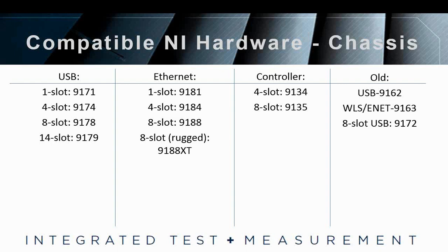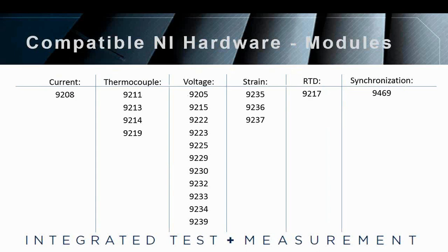The next slide covers the compatible NI hardware modules — all the types of modules that can be used with iTestSystem. You can collect current channels using a 9208 module, thermocouple channels using the listed modules, voltage modules, and strain modules. We just recently added an RTD module, and you can do synchronization between your chassis using the 9469 module. This list is also provided on the website, iTestSystem.com, and in the help documentation with the program. If you're wondering whether you can use a certain type of module, feel free to check the website or help documentation.